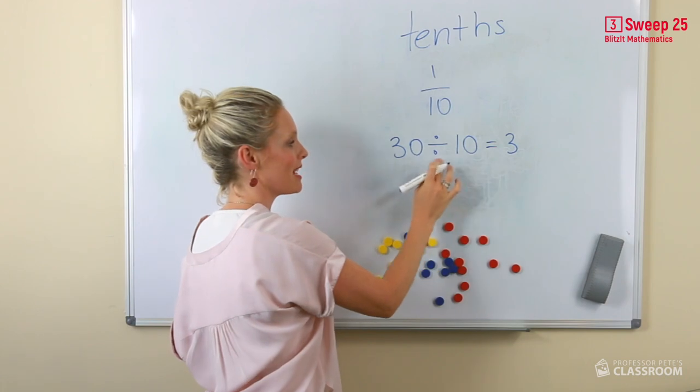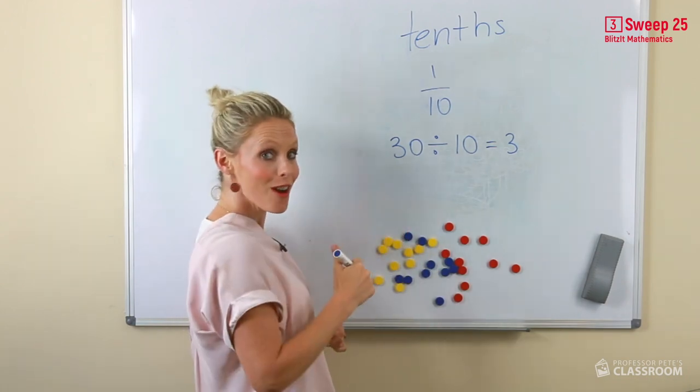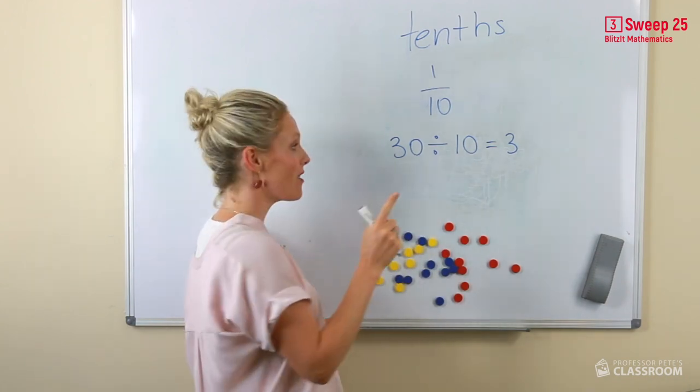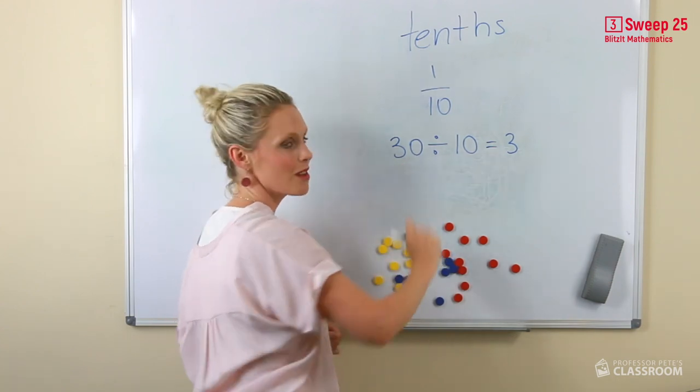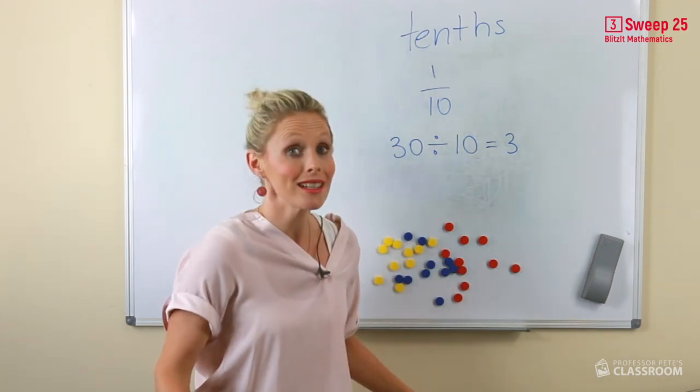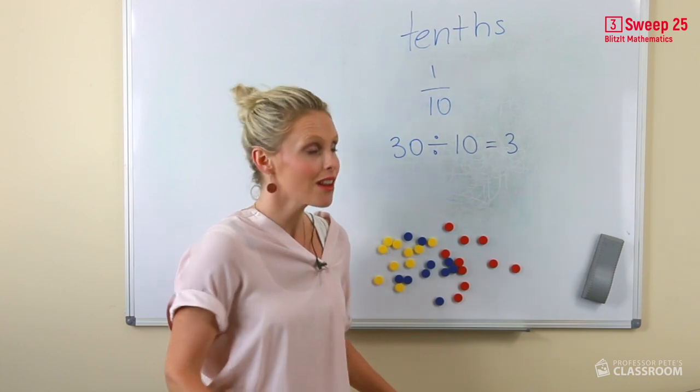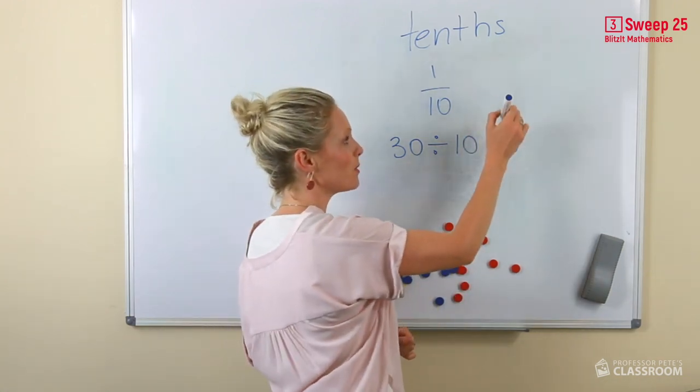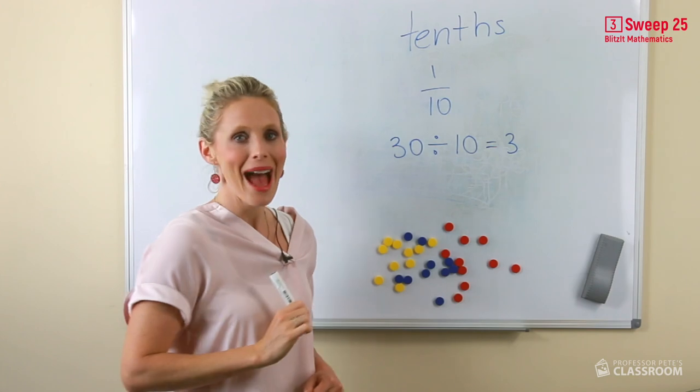The answer is 3. 3 times 10 equals 30. But we already know our division number fact because we are clever. 30 divided by 10 equals 3. So one-tenth of 30 equals 3. Amazing!